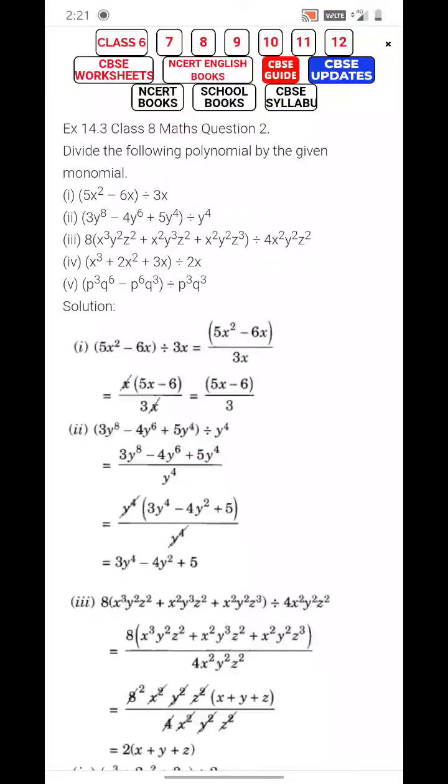Welcome back again. Let's move to question number 3, which is dividing the following polynomial by the given monomial. Polynomial means generally we say that any expression having one term is known as a monomial, then with two terms a binomial. So when do we call them polynomial?